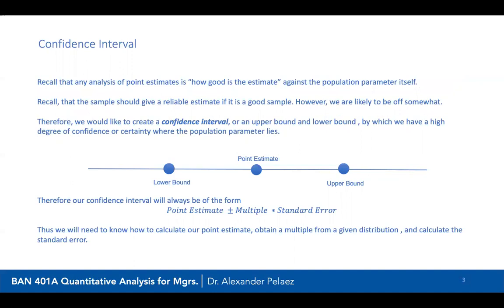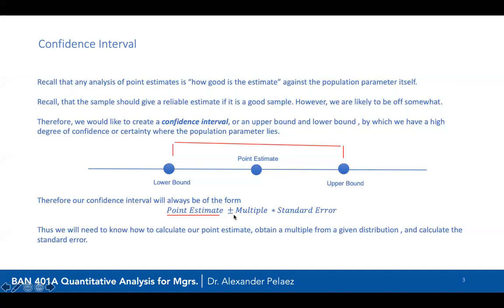When we have a point estimate, we're referring to the mean. The point estimate of the population mean is the sample mean. The sample gives a reliable estimate of the population mean, but we know we'll be off by some amount. So we want to create a confidence interval where the population mean will lie in an area plus or minus of that point estimate. We'll take the point estimate plus or minus a margin of error. We've already discussed the standard error — sample standard deviation divided by the square root of n — but we haven't talked about the multiplier yet.